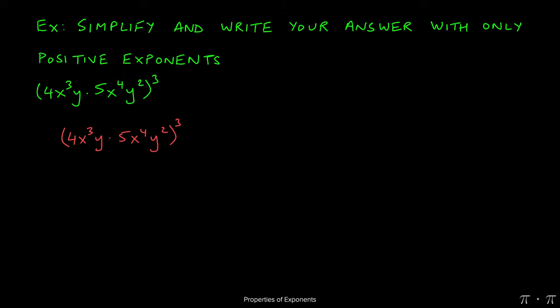We start working from the inside out, and the easiest thing to do is to rearrange it so that all the like terms are together. Meaning, we can rewrite the 4 and the 5 at the beginning, because they will be multiplied together, we can write the x's together, so we have x cubed times x to the fourth, and y's together, y times y squared. The power on the outside stays there.